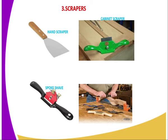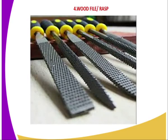We have the cabinet scraper — that is the first one. We have the hand scraper, and also we have the spokeshave scraper. Then we have the fourth type of tool that is normally used during smoothing work on wooden surfaces, which is the wood file, or in other words, it is also referred to as a rasp.